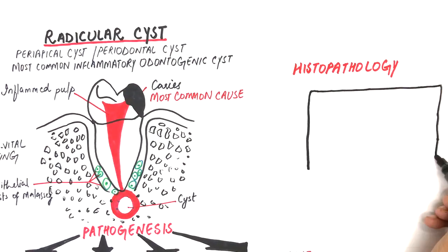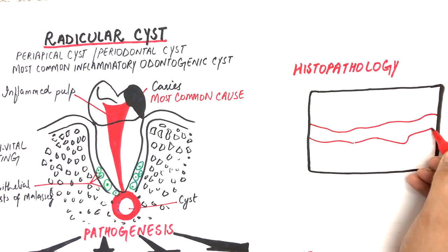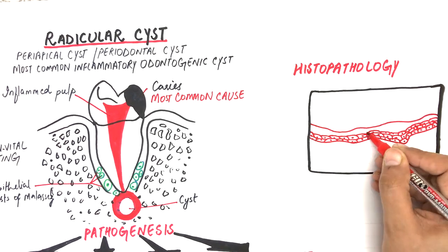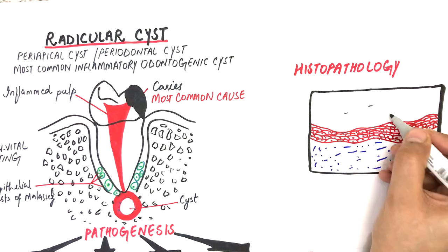Histopathologically, three areas can be identified: a cystic cavity filled with fluid and cellular debris which is lined by a non-keratinized stratified squamous epithelium and a fibrous capsule.